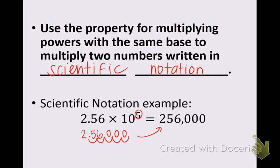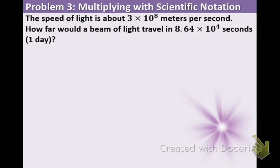So now let's multiply two values in scientific notation. And here's an application problem that you'll definitely see something like this in science class soon. The speed of light is about 3 times 10 to the 8th meters per second, which is really fast. How far would a beam of light travel in 8.64 times 10 to the 4th seconds, aka one day?